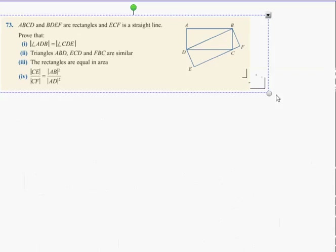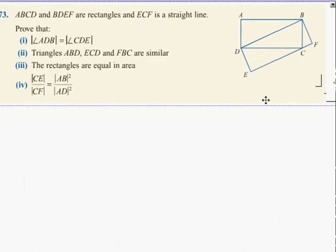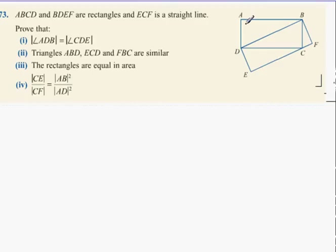Question 73. Triangles ABCD and BDEF are rectangles, and ECF is a straight line. Prove that angle ADB equals angle CDE. I have to prove angle ADB - that one there - equals angle CDE - that one there.